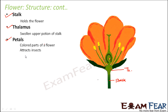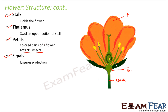Petals are the colored parts of the flower and their purpose is to attract insects. Now why do flowers need to attract insects? Pollination plays a very important role in reproduction in flowering plants. For pollination you need pollinating agents, and insects act as pollinating agents. Therefore flowers attract insects with the help of these colorful petals.